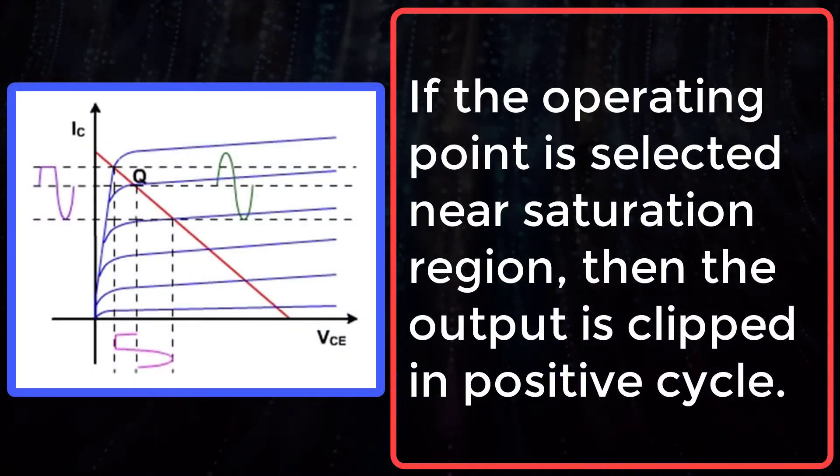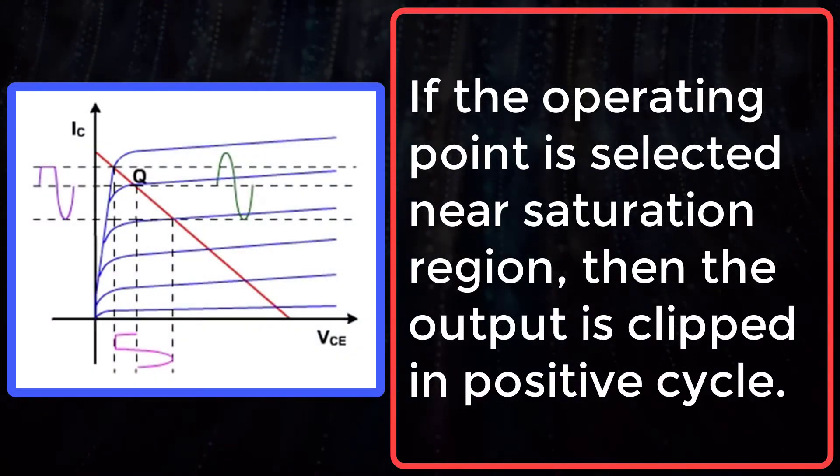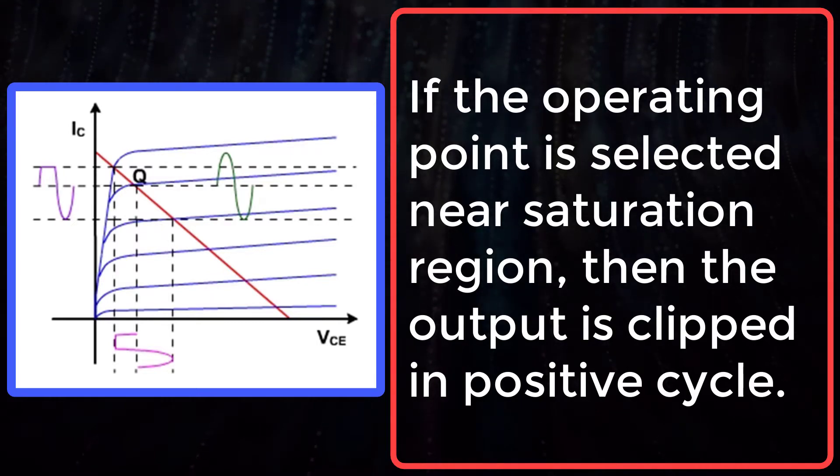If the operating point is selected near saturation region, then the output is clipped in the positive cycle as shown here.